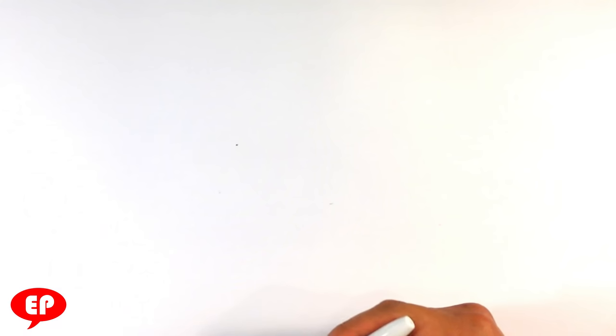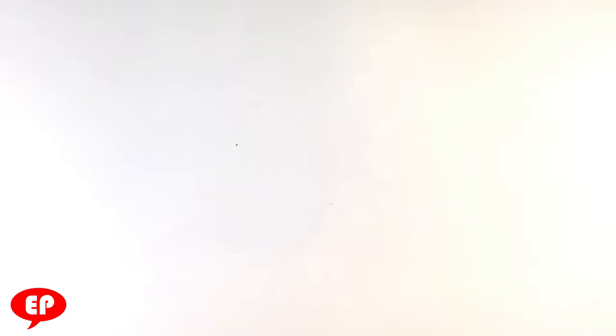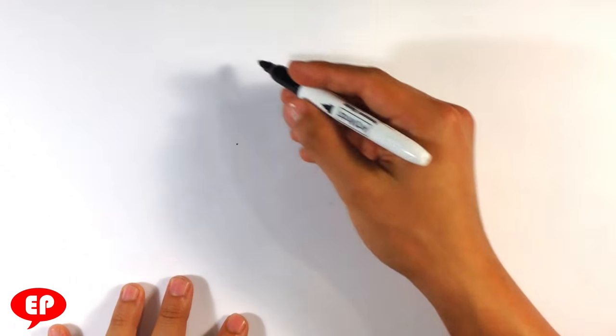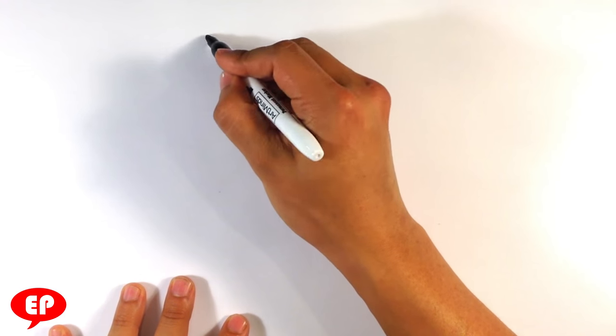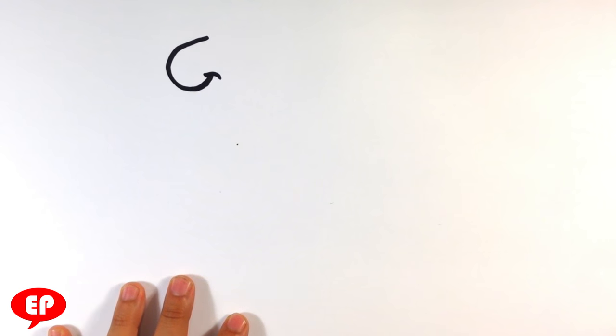I'm gonna be using this permanent marker like I said, this is called an Art Minds, but it's the exact same thing as a Sharpie like this. Just make sure it's about kind of that pointed tip and you're set to go. So let's start going, top of the mouth here.